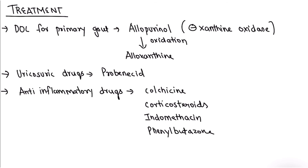Coming to treatment: if you are a first year MBBS student, you need to memorize these drugs — allopurinol, probenecid, anti-inflammatory drugs like colchicine, corticosteroids, indomethacin, and phenylbutazone. You don't need to go into detail; just write the 4-5 drugs in the exam, as you will study these in detail again in second year pharmacology.